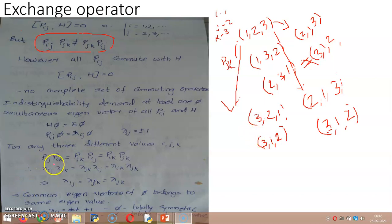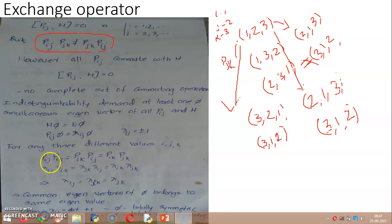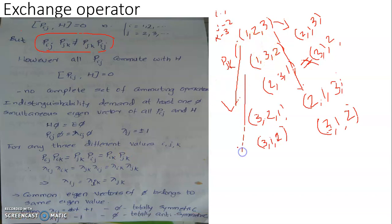From this we have seen that P_ij times P_ik is equal to P_jk times P_ij. This means that these operators are not exactly commuting, because if P_ij and P_ik commuted, we would have P_ij P_ik equal to P_ik P_ij. But we have seen P_ij P_ik is equivalent to P_jk P_ij, and this is further equivalent to P_ik P_jk.